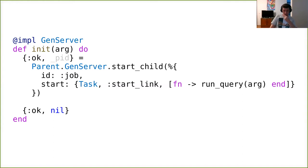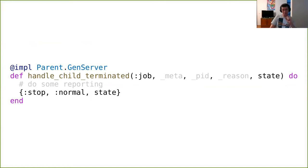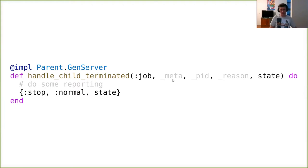In my opinion, this is an appropriate example where process dictionary can be used. Moving forward — when our child terminates, we will not get an exit message. Instead, parent will invoke the single callback it adds: handle_child_terminated. You don't have to implement it if you don't need to handle termination — the default implementation does nothing. You get five arguments: the ID from the child specification, a meta field which is arbitrary information you can attach to the child when starting it.